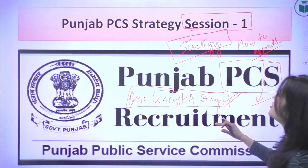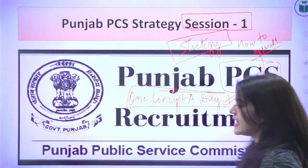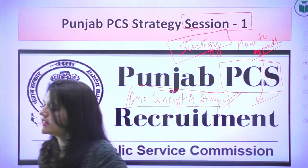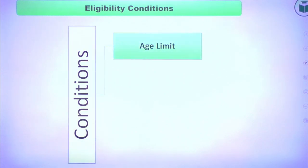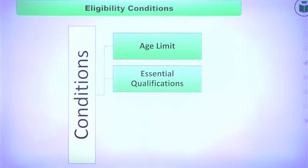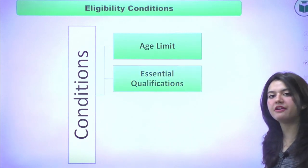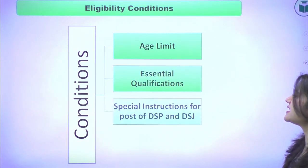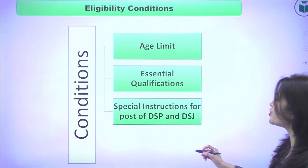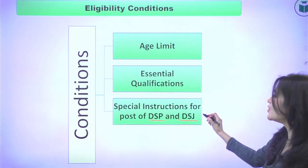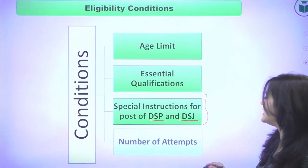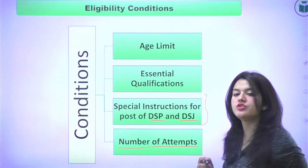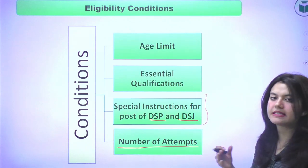Today's session is strategy session one. We will discuss the eligibility conditions: the age limit, essential qualifications needed to apply for PCS, special instructions for the post of DSP and DSJ, and the number of attempts given to general candidates, SC, and BC candidates.